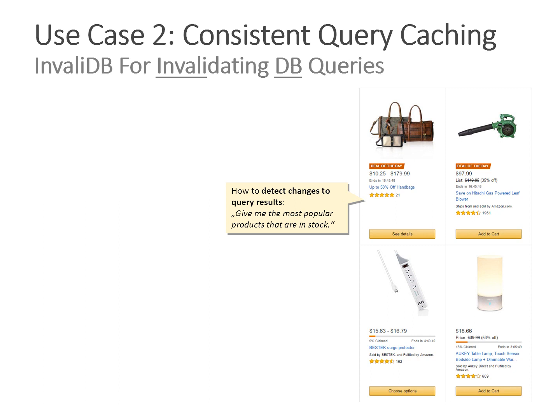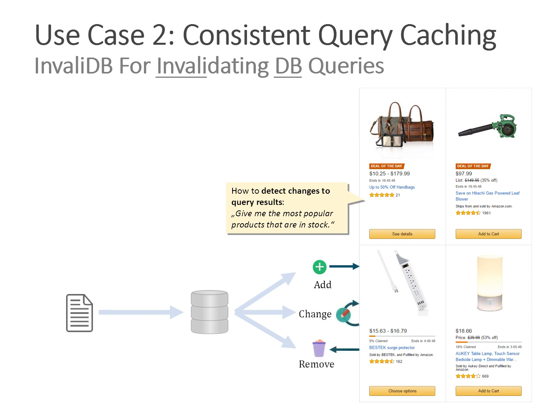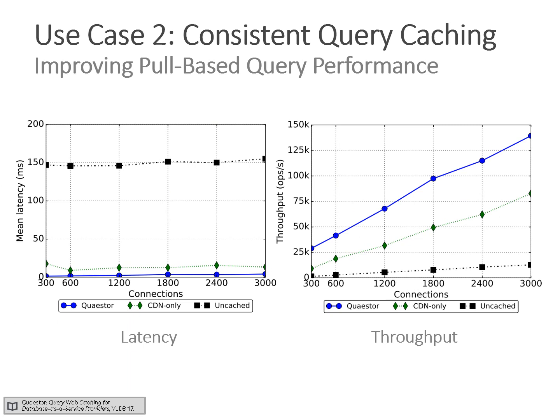The second use case is consistent query caching for improving the performance of pull-based databases. InvalidDB was initially designed for invalidating database queries — hence the name. We make even complex database queries cacheable. For example, a user searches for products in a webshop; we deploy InvalidDB to detect whether anything has been added, changed, or removed in any currently cached database queries, and if so, InvalidDB invalidates those caches. We evaluated this use case in our VLDB 2017 publication and found that both latency and throughput of traditional pull-based queries can be improved by several orders of magnitude.